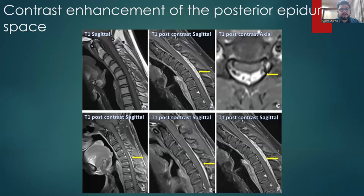The last set of images shows contrast enhancement of the posterior epidural space. The first set of images in the top row shows a patient with markedly increased laminodural space on the flexion T1 sagittal image, showing post-contrast enhancement on sagittal as well as axial images. The bottom row shows contrast enhancement in cases with mild increase in laminodural space in Image D, moderate increase in Image E, and severe increase in Image F, with post-contrast enhancement seen in all three cases.